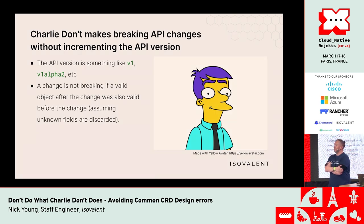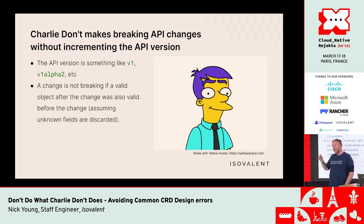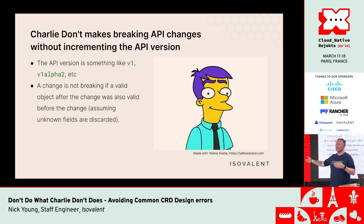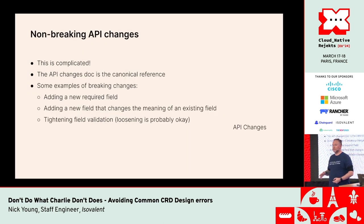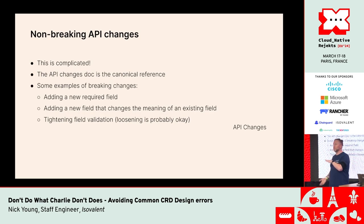Charlie Don't makes breaking API changes without incrementing the API version. A change is not breaking if a valid object after the change was also valid before the change, assuming you discard unknown fields. Adding a new field that defaults to doing nothing is not a breaking change. Adding a value to a field that, if unknown, does nothing is not breaking. The exact list is complicated — the API changes doc covers many thousands of words on what constitutes non-breaking changes.